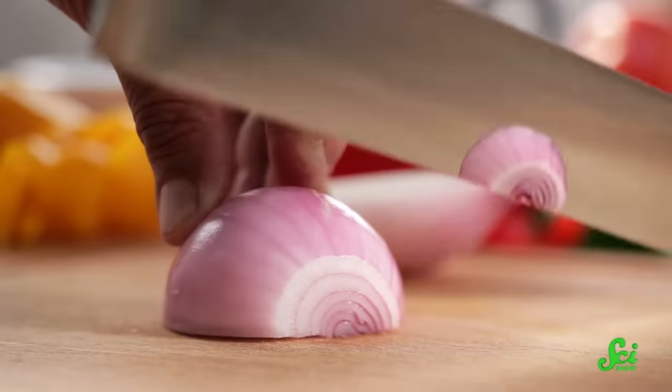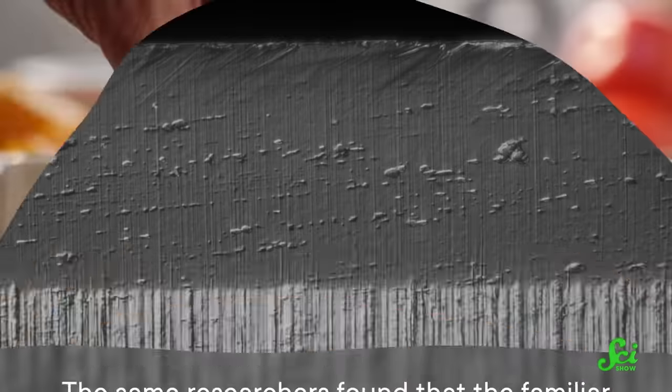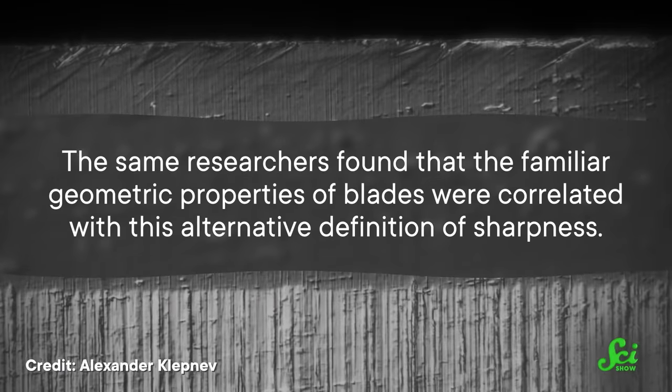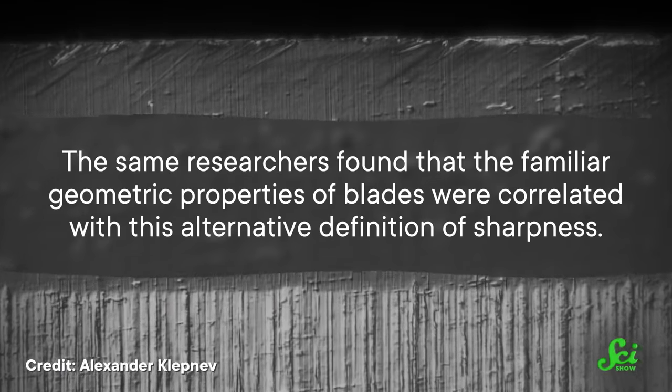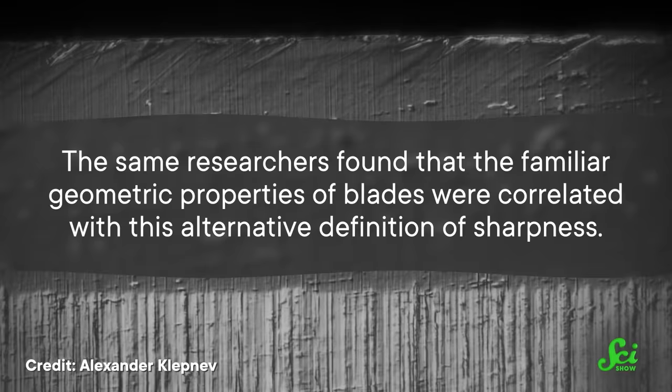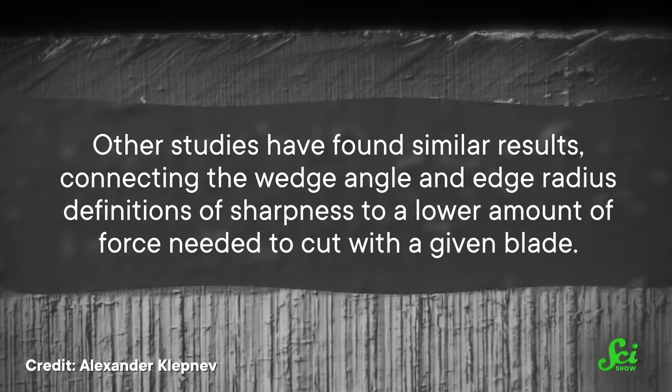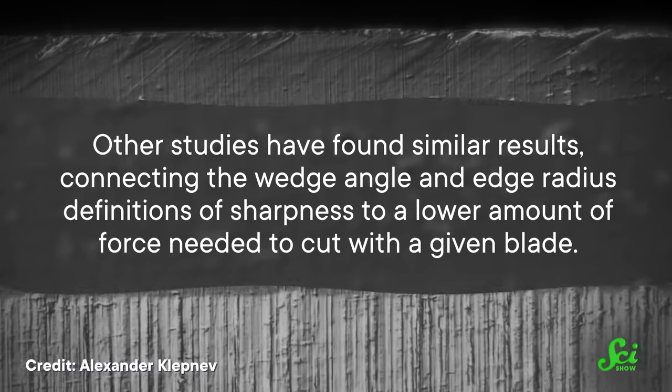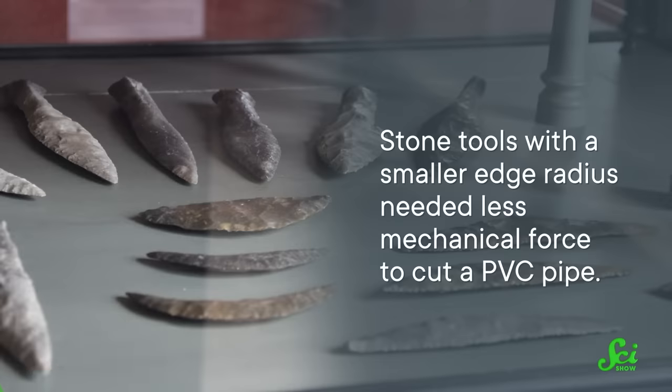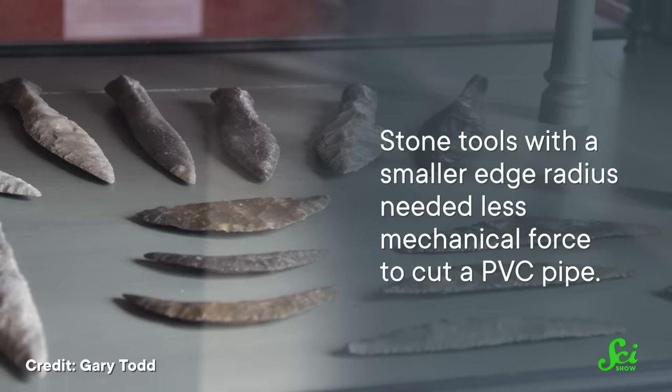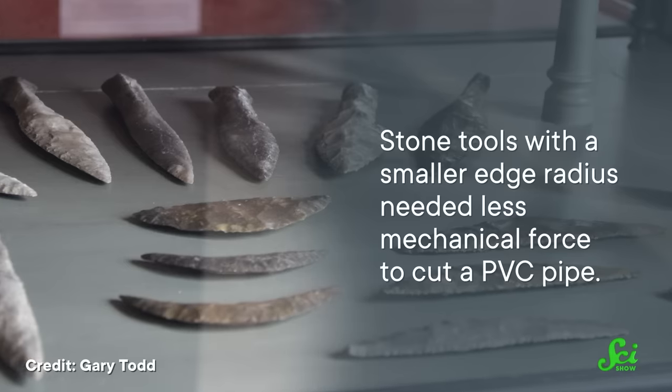Better still, the same researchers found that the familiar geometric properties of blades were correlated with this alternative definition of sharpness. Other studies have found similar results, connecting the wedge angle and edge radius definitions of sharpness to a lower amount of force needed to cut with a given blade. And that includes those Stone Age tools we mentioned earlier. A 2022 study led by an archaeologist at the University of Cambridge found that stone tools with a smaller edge radius needed less mechanical force to cut a PVC pipe. So for stone tools, at least, both the geometric and mechanical definitions of sharpness make sense.